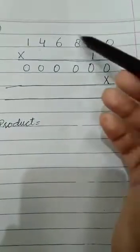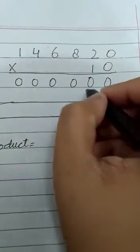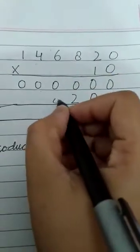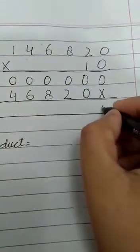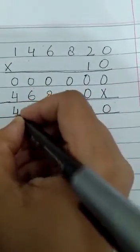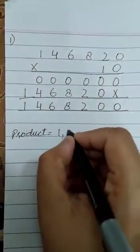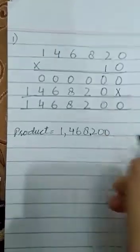1 also has a special property: 1 multiplied with any number gives us the number itself. So 1 × 0 = 0, 1 × 2 = 2, 1 × 8 = 8, 1 × 6 = 6, 1 × 4 = 4, 1 × 1 = 1. Now there are no more numbers, so we add the two rows: 000000 plus 012640. We add them to get our answer.